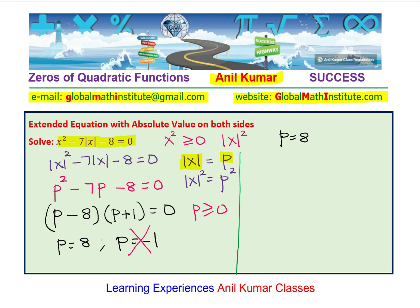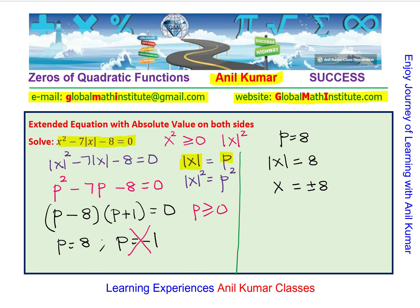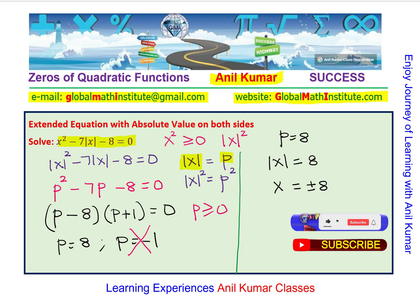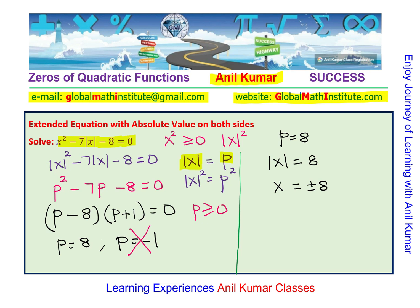Now, p is the absolute value of x. So we have absolute value of x equal to 8, and therefore we can write x as equal to plus or minus 8. In case you had written absolute value of x equals minus 1, you would have seen that it really doesn't give you any solution. So we have two solutions: x equals positive 8 and x equals negative 8.